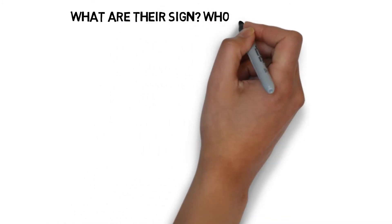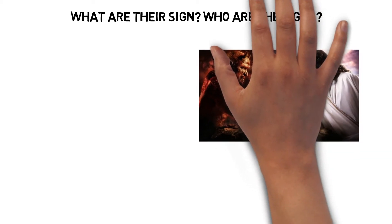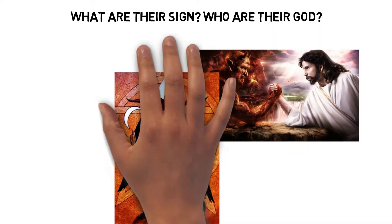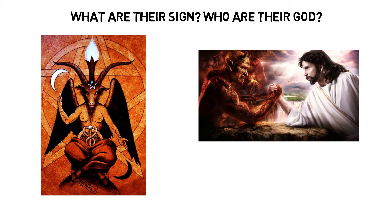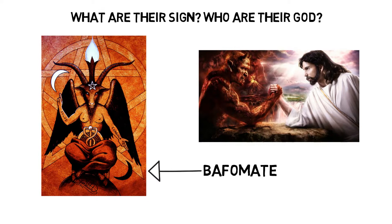What are their signs and who are their gods? Their gods are devil, Baphomet, Lucifer, Satan. Baphomet is drawn in such a way that shows the face is of a goat, and body is of women, and hands and legs are of different animals.